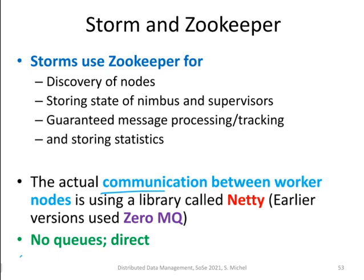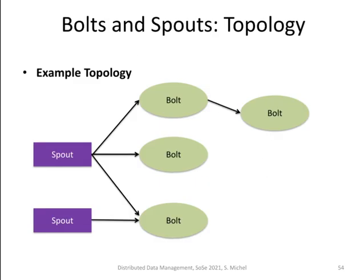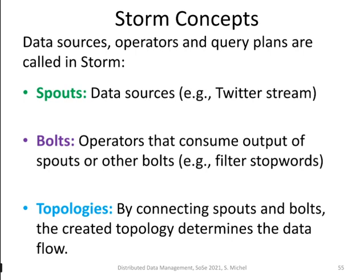The actual communication is not done through ZooKeeper but through special libraries directly between supervisor nodes — there are no queues; it is direct communication between compute nodes. In Storm we talk about topologies consisting of spouts and bolts: spouts are data sources, bolts are operators, and the topology is a composition of spouts and bolts depending on your query.